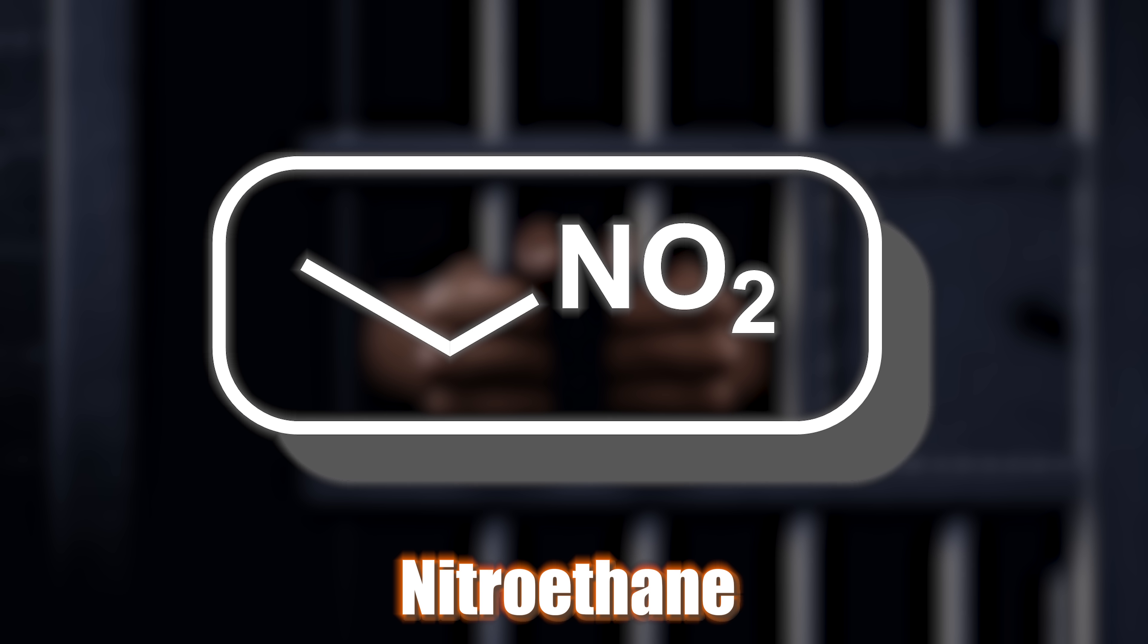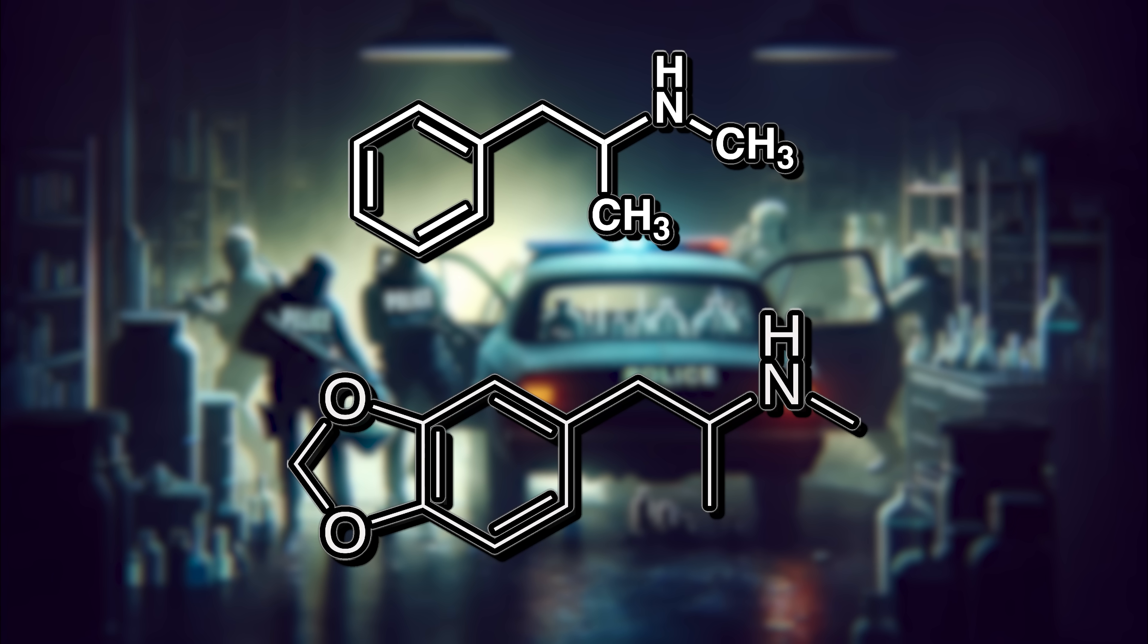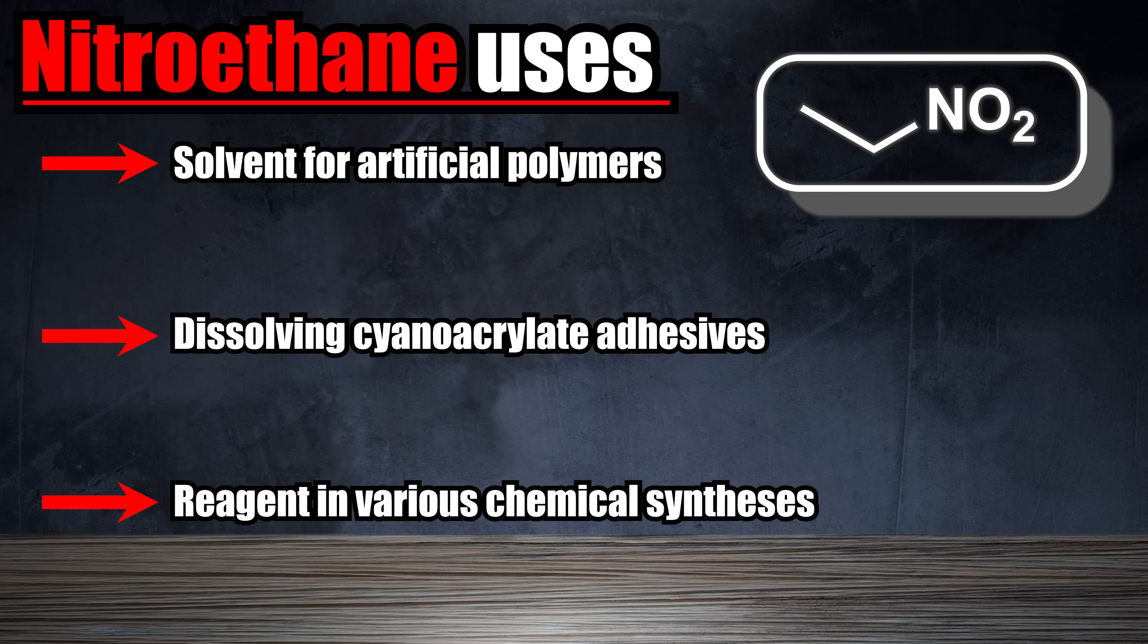Now, nitroethane is on the DEA's list one chemical list, but it isn't illegal. Some of the most common uses of nitroethane is a solvent for artificial polymers, dissolving cyanoacrylate adhesives, and used as a reagent in various chemical syntheses. And just like nitromethane, this can be used as a fuel additive.